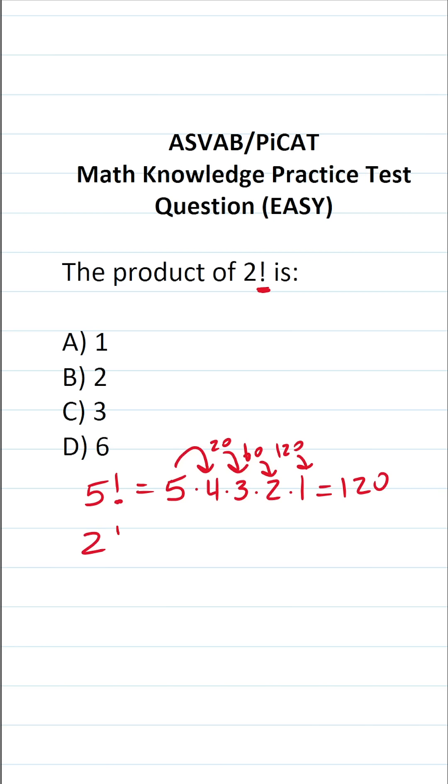All right, what is the product of 2 factorial? Again, we're going to take the number that we're given, which is 2, and we're going to multiply it by every number that's less than 2 until we get to 1. So this is just 2 times 1. 2 times 1 is just 2. So the product of 2 factorial is going to be B2.